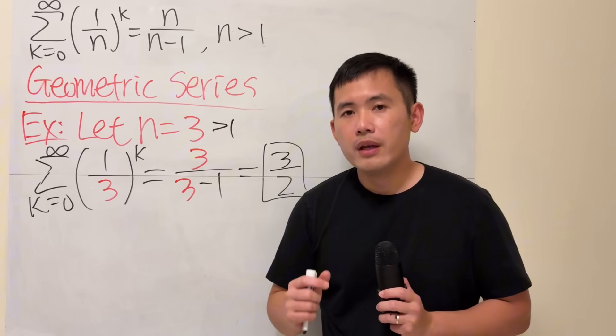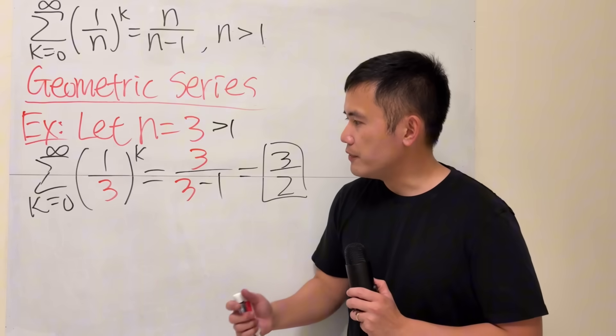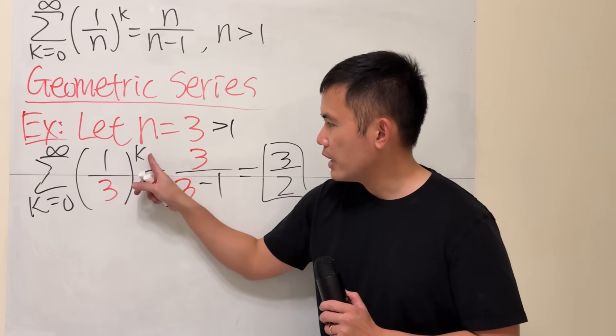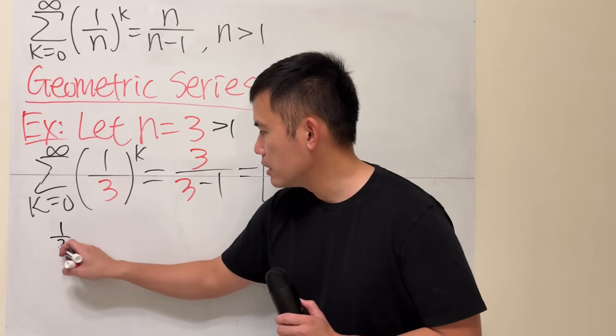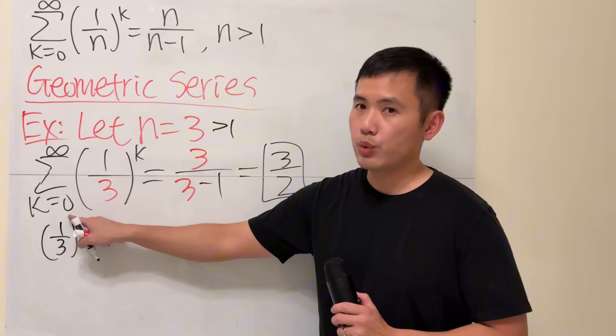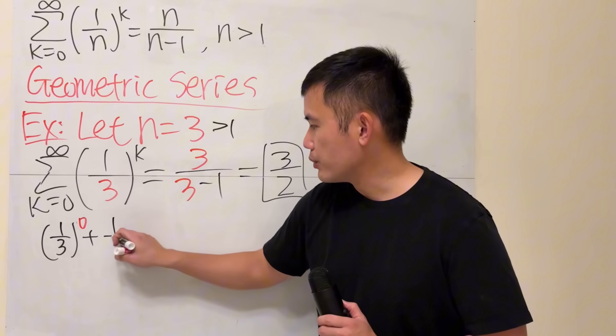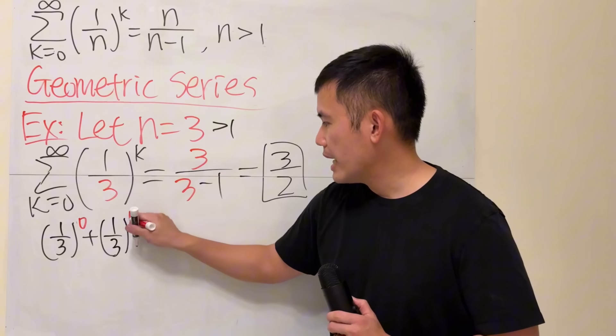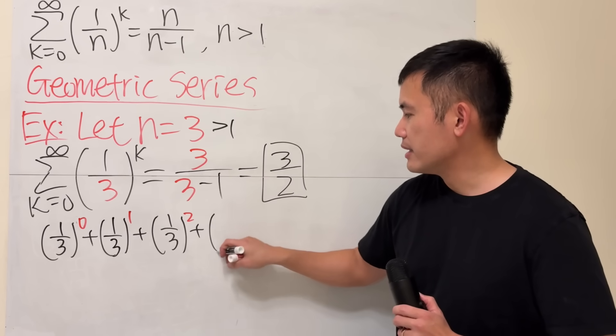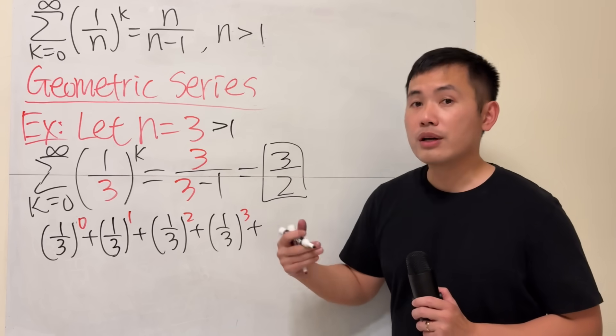Now, here's the deal. Sometimes, in order to understand a series, it's beneficial if you just expand this. Meaning that if you put 0 into k first, we have 1 third raised to the 0's power, and then the next number, which is when k is equal to 1. So go ahead and do that. And then continue, 1 third to the 2nd, then the 3rd, and so on.